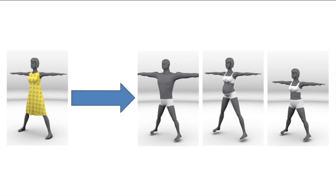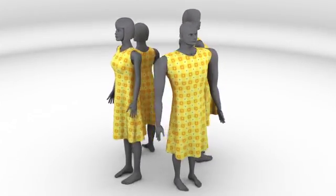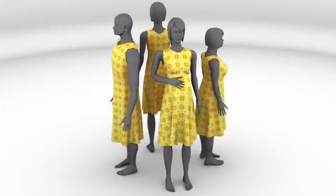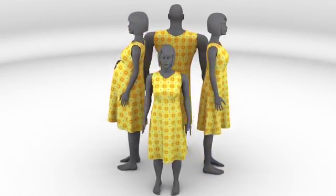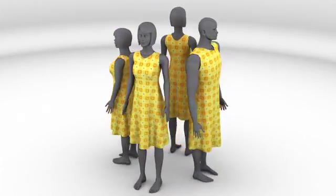Here are some results. We start with an example of transferring a simple dress to several different characters. Since our transfer method automatically generates low distortion graded patterns for the output garment, we can immediately texture the transferred dresses.